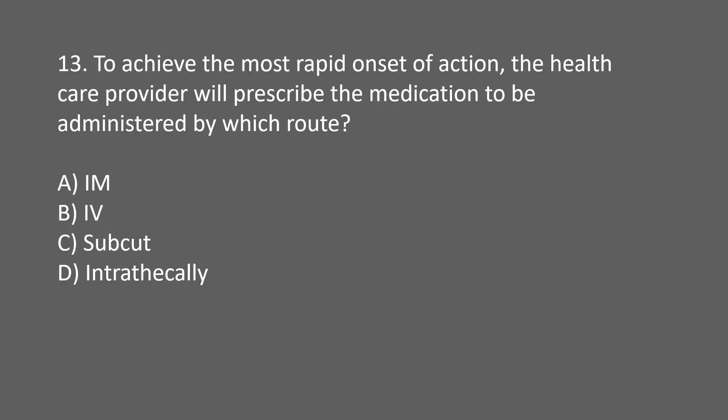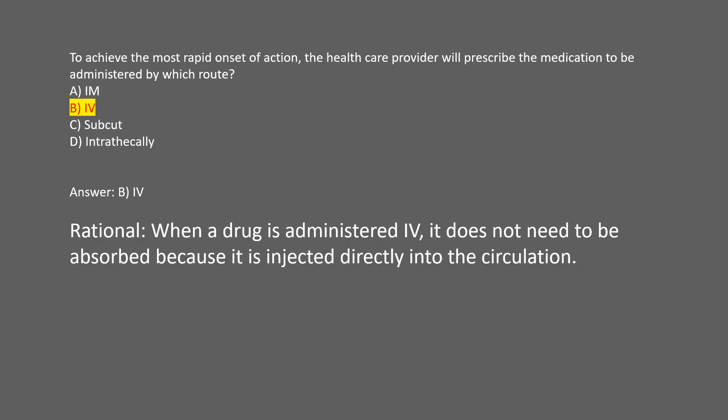To achieve the most rapid onset of action, the health care provider will prescribe the medication to be administered by which route? A. IM. B. IV. C. Subcut. D. Intrathecally. Answer: B. IV. Rational: when a drug is administered IV, it does not need to be absorbed because it is injected directly into the circulation.